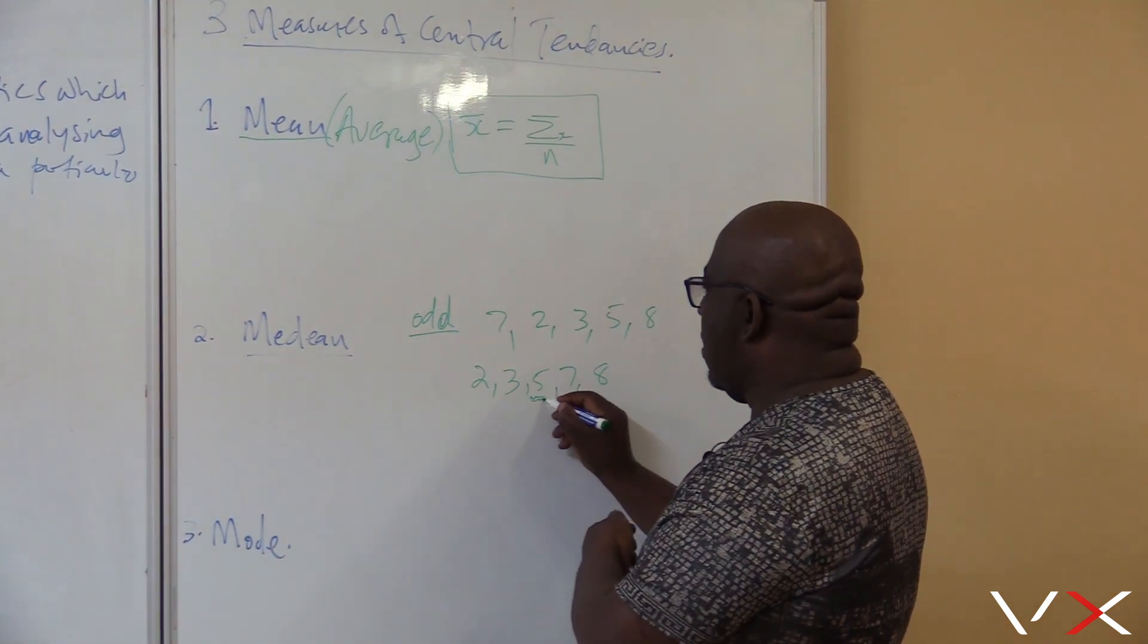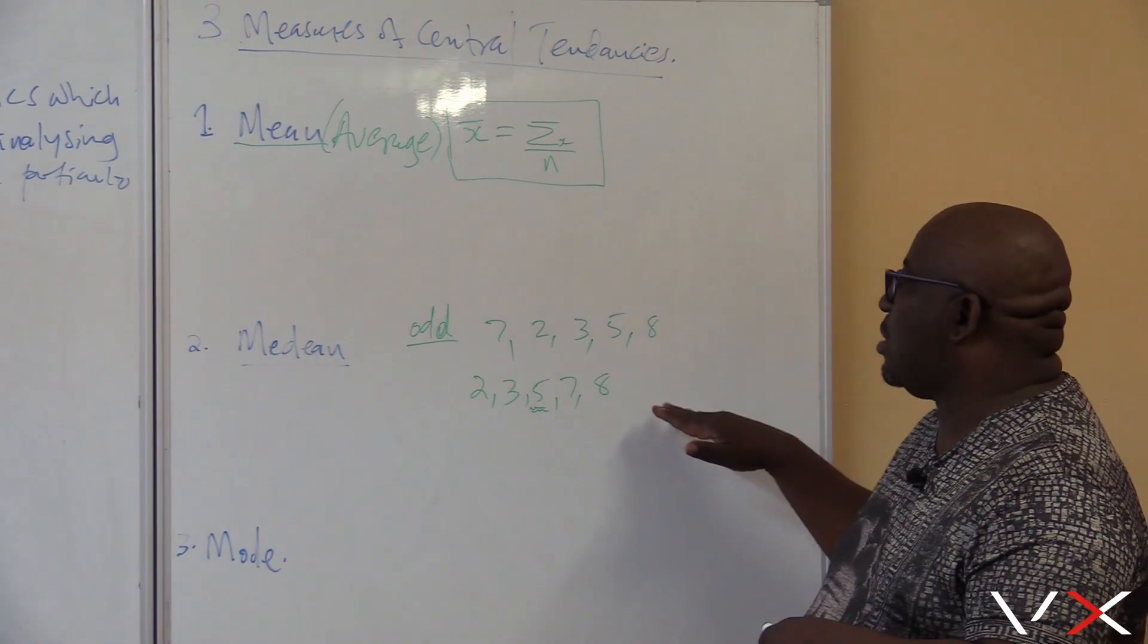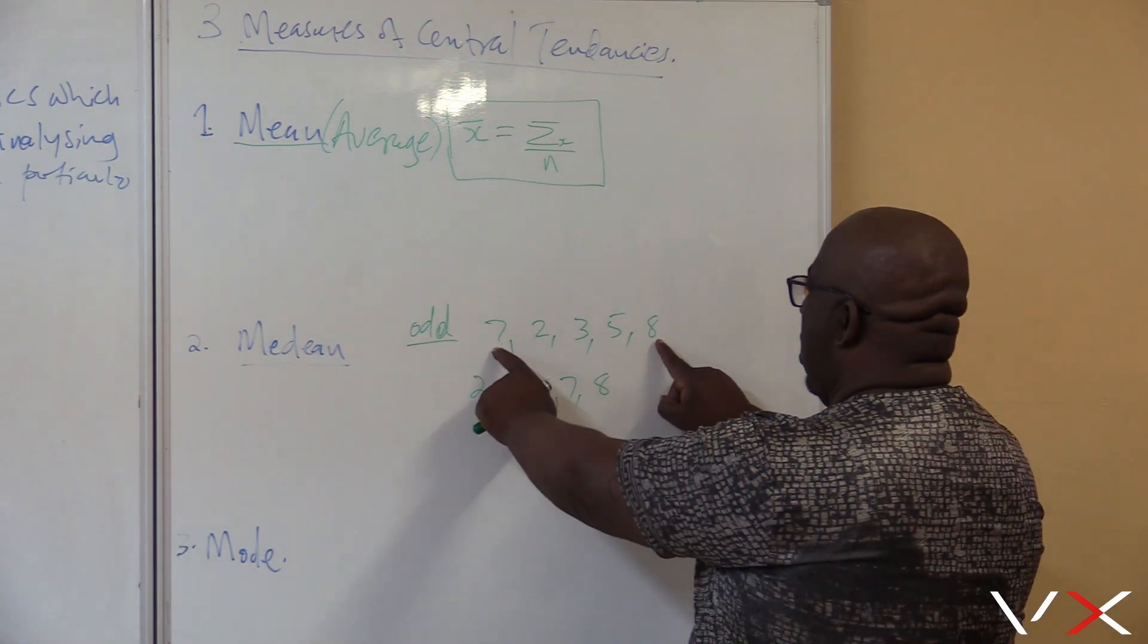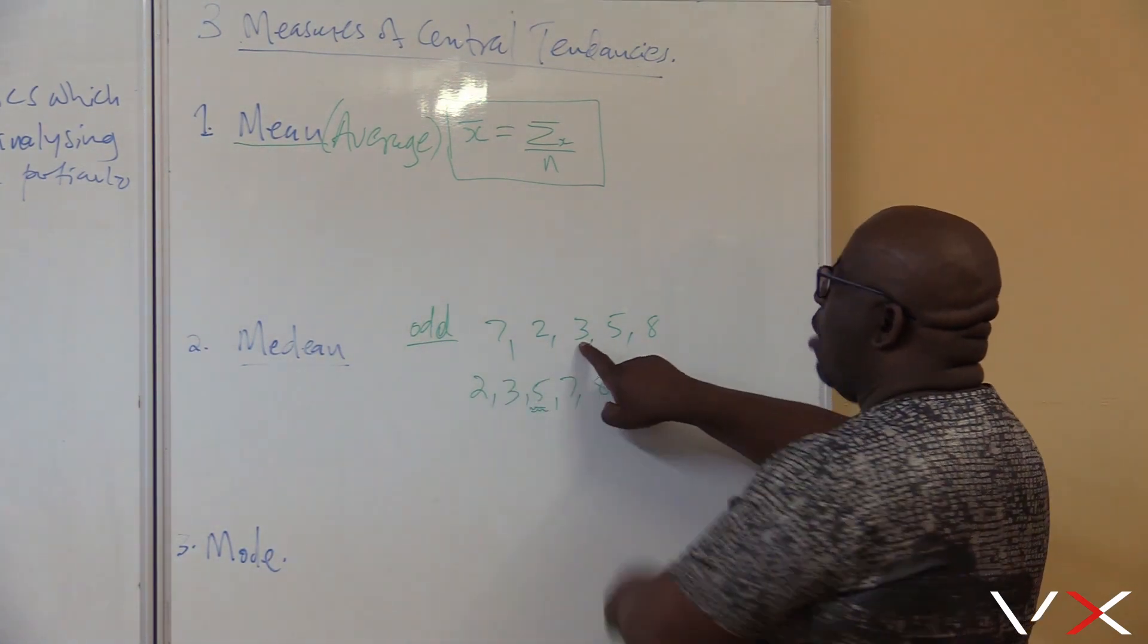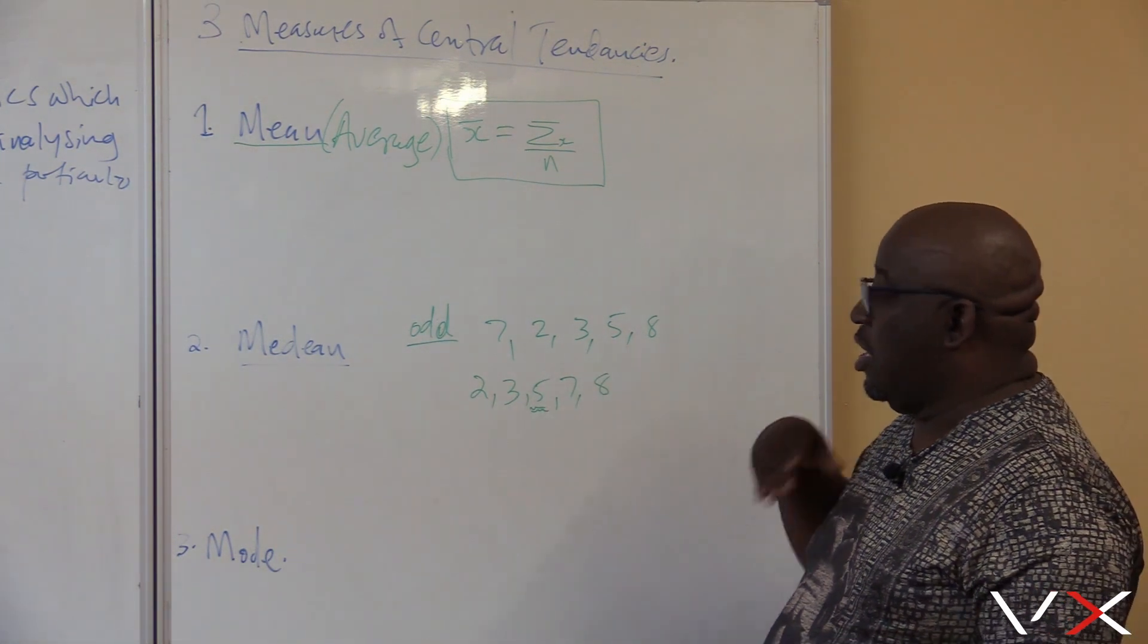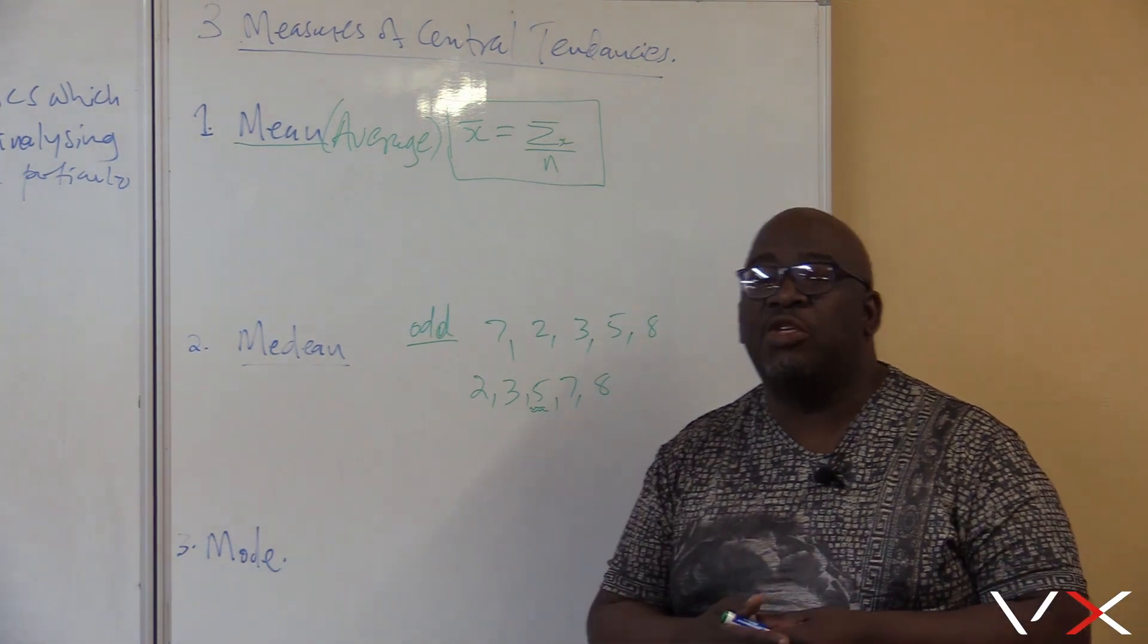In this particular case, my median is 5. But if I did not arrange this data in this order, I was going to get the wrong median. Let's watch. I move, I move, I move. I will think my median is 3. But it is not 3. It is 5. Once you arrange it, it becomes easier to find the median, especially if your data is odd.